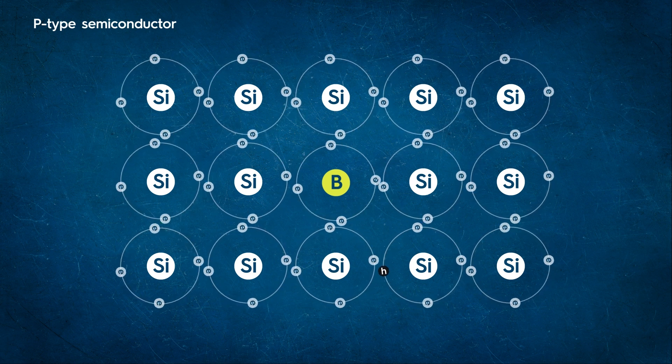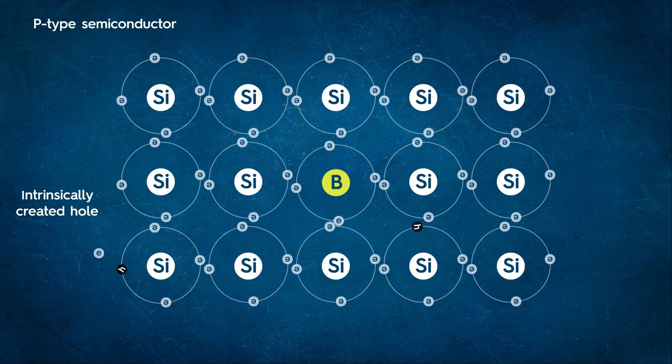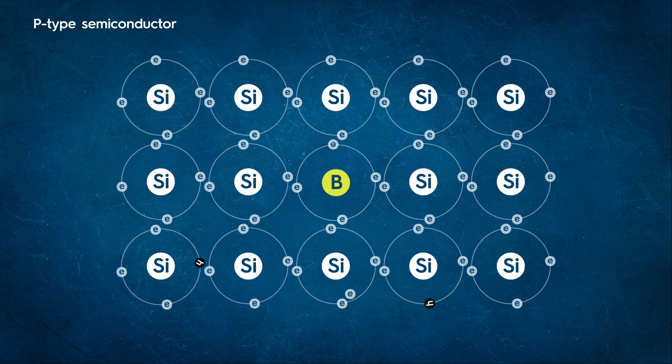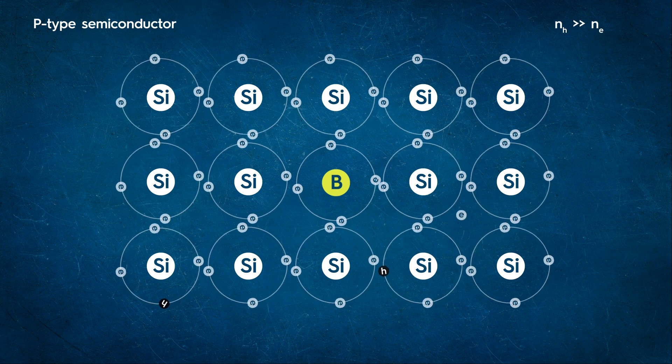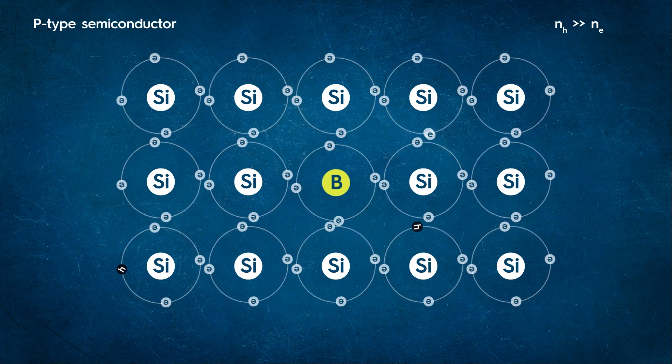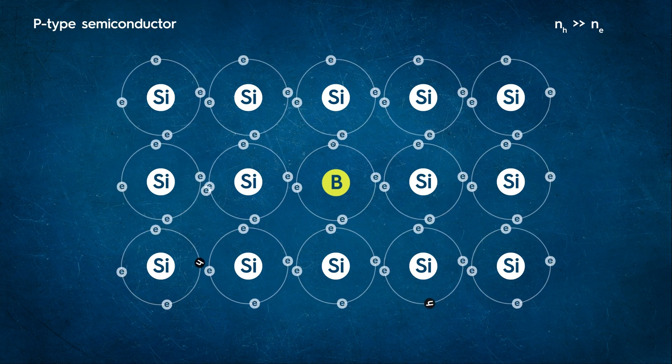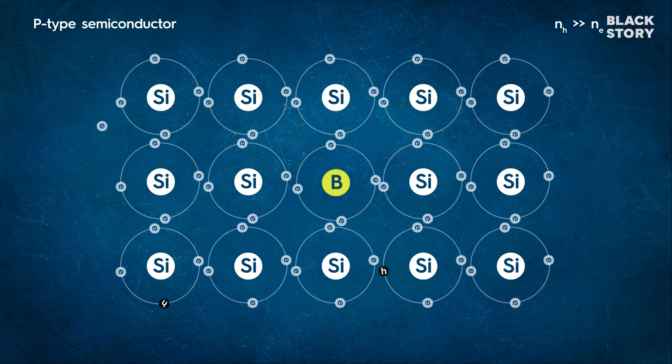These are in addition to the intrinsically created holes. Finally, due to large numbers, positively charged holes become majority carriers and electrons become minority carriers. Therefore, extrinsic semiconductors doped with trivalent impurity are called p-type semiconductors.